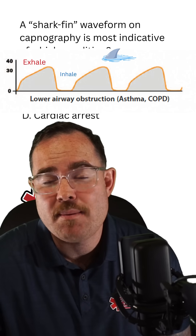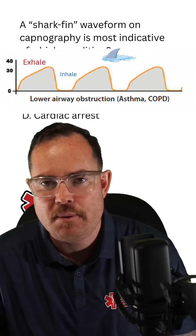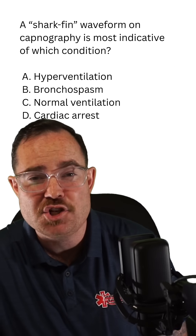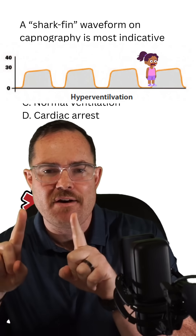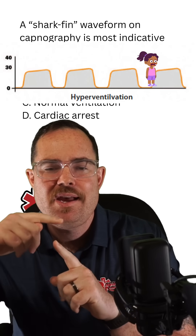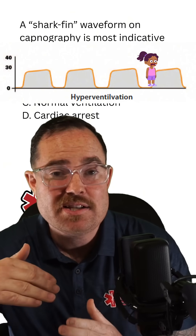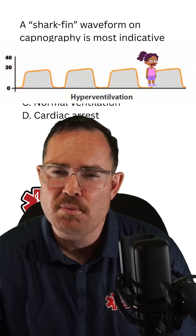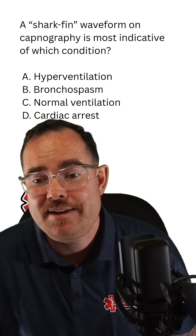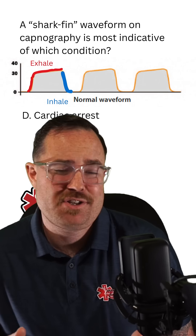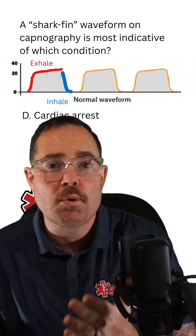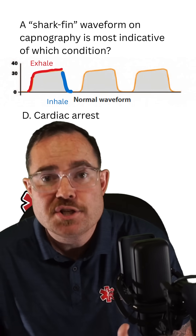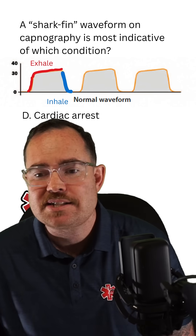It's not uncommon to see a shark fin appearance with bronchospasm. If I see option A, hyperventilation, it's very narrow, and typically those end-tidal values are much lower than normal. With C, normal ventilation, I would have what appears to be a normal plateau with an IE ratio of one to two.